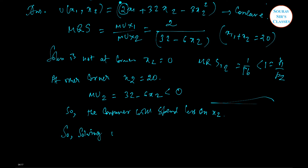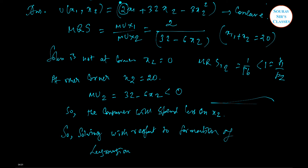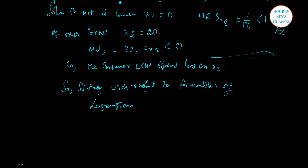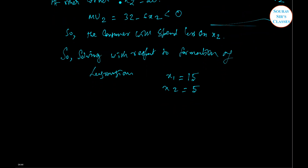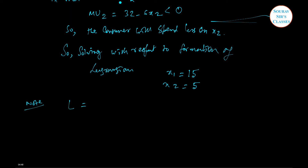Solving via the Lagrangian formation: L equals 2x1 plus 32x2 minus 3x2 squared plus lambda times (20 minus x1 minus x2). We take the partial derivatives ∂L/∂x1, ∂L/∂x2, and ∂L/∂lambda.